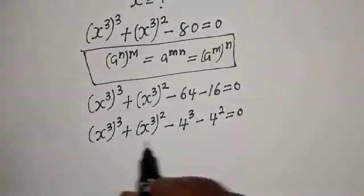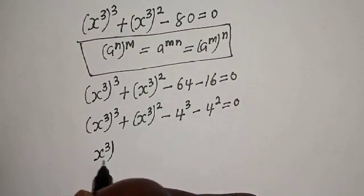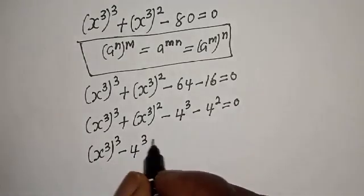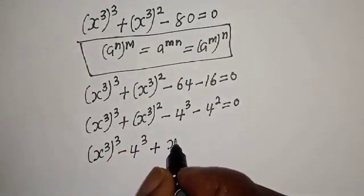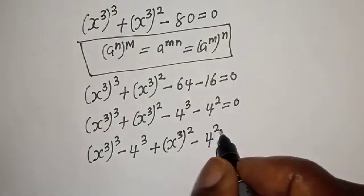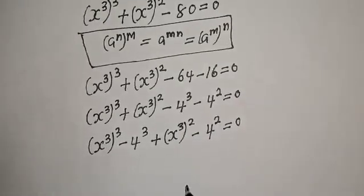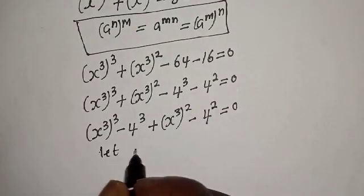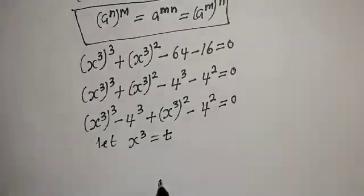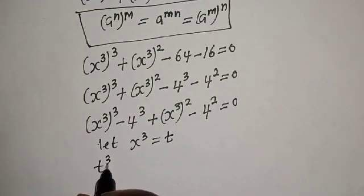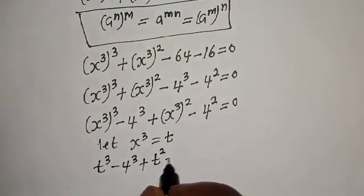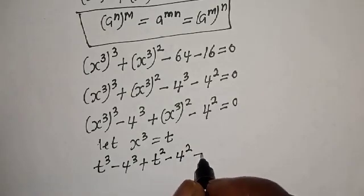Let's compare. Setting t equals s raised to power 3, we have t raised to the power 3 minus 4 raised to the power 3, plus t squared minus 4 squared, is equal to zero.